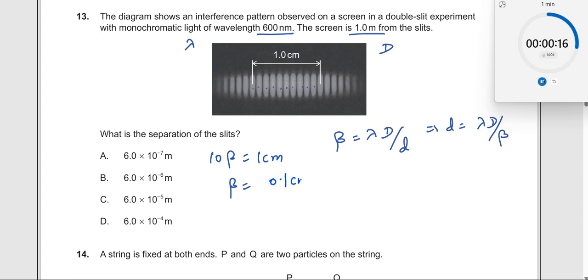Beta should be equal to 0.1 centimeter. Let us substitute all the values. I get the value of d is equal to lambda is 600 nanometers multiplied by capital D, 1 divided by small d. What is small d? 0.1 centimeter.